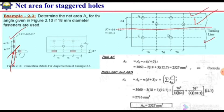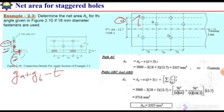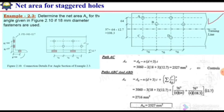In the unfolded shape, the upper 152 millimeter leg has two lines of bolts and the smaller 102 millimeter leg has one line. The gauge distance between the two lines in the longer leg is 64. The distance between the bolt in one leg and the bolt in the other leg is measured using ga plus gb minus t, where t is the thickness 12.7 mm. So the combined gauge distance is 108.3 millimeters.